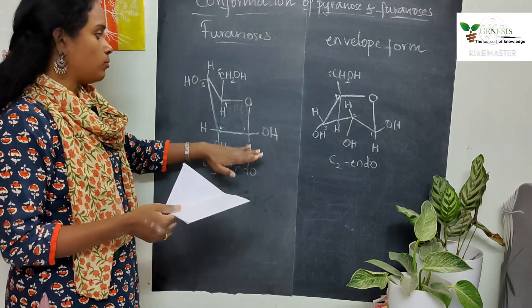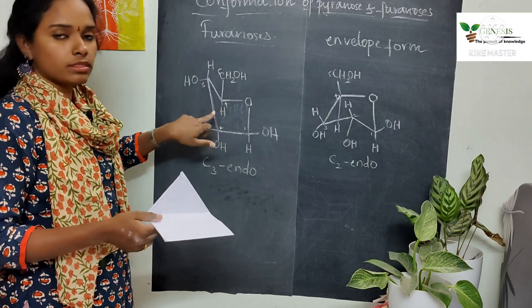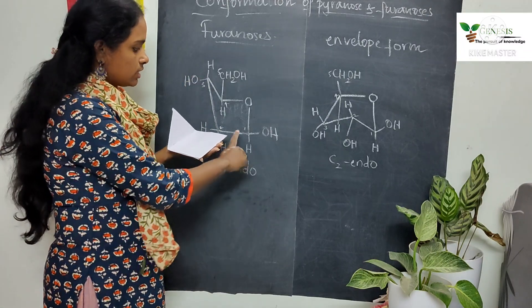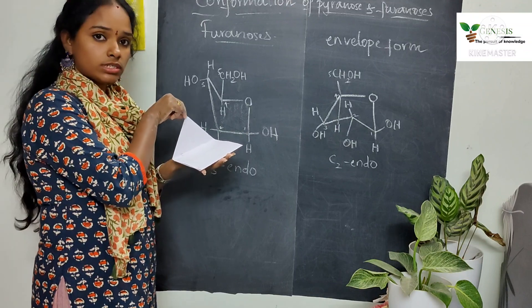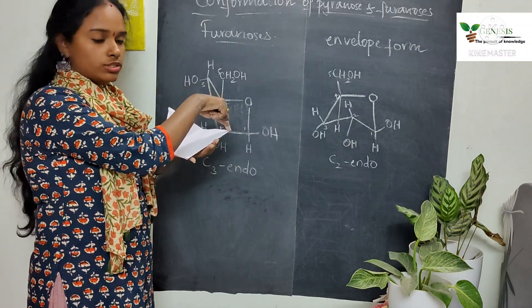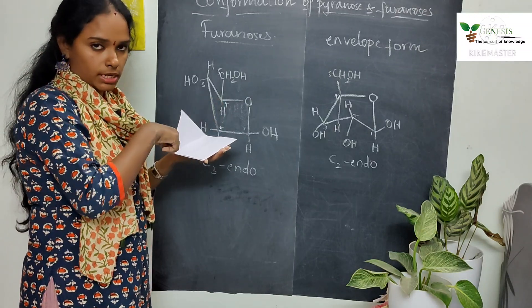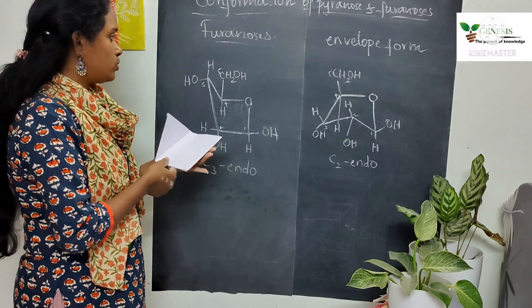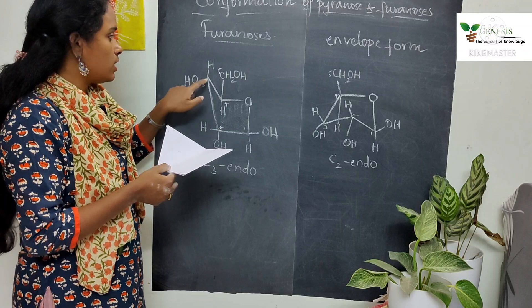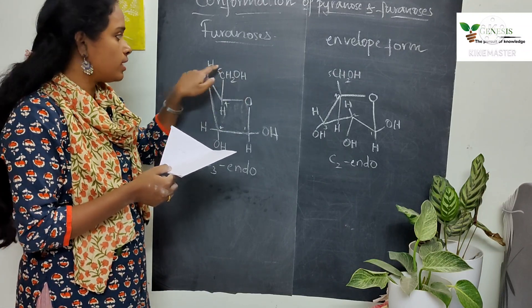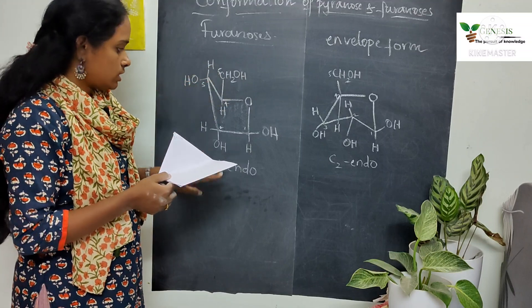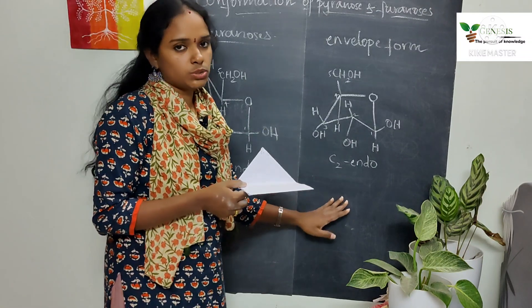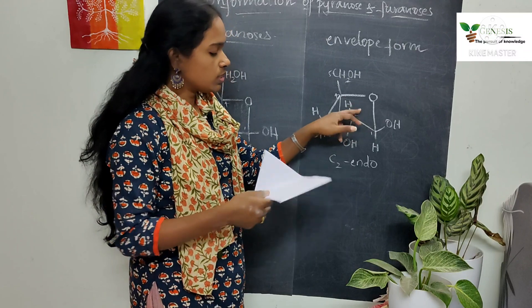Using ribose as an example: in the C3-endo form, four atoms — C1, C2, C4, and the oxygen — are in the plane, while C3 is raised up toward the same side as the CH₂OH (C5). In the C2-endo form, the oxygen, C1, C3, and C4 are in the plane, while C2 is the puckered carbon raised toward the CH₂OH group.